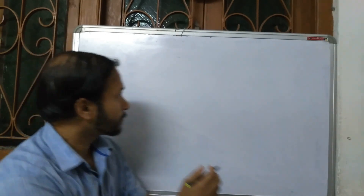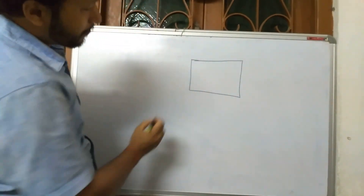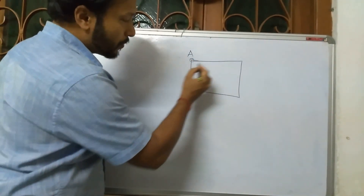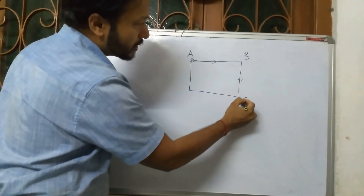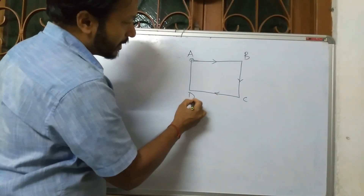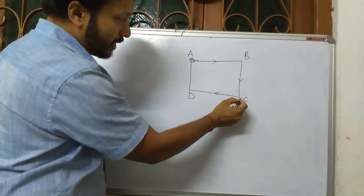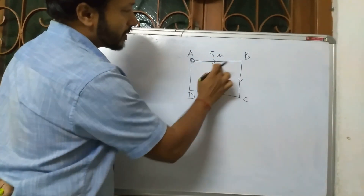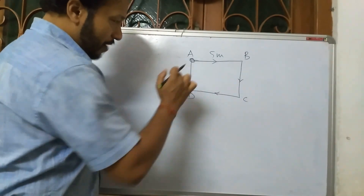Let us consider a square path. A person is starting from A, first going from A to B, then from B to C, then from C to D. This side is 5 meters, so obviously all sides are 5 meters, since this is a square — 5, 5, 5, 5.